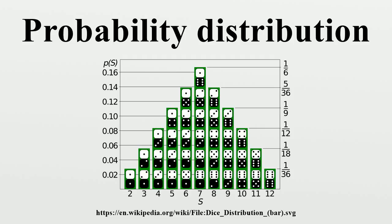Categorical distribution for a single categorical outcome — a generalization of the Bernoulli distribution. Multinomial distribution for the number of each type of categorical outcome given a fixed number of total outcomes — a generalization of the binomial distribution. Multivariate hypergeometric distribution, similar to the multinomial distribution but using sampling without replacement — a generalization of the hypergeometric distribution.